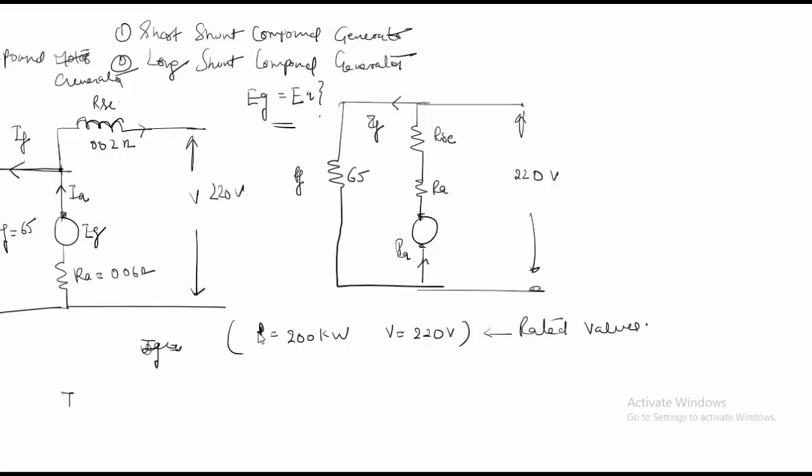So my field current is equal to or my load current which is equal to 200 into 10 raised to minus 3 or 3 divided by the value which is given by my voltage which is 220 and this comes close to 909.09 amperes.